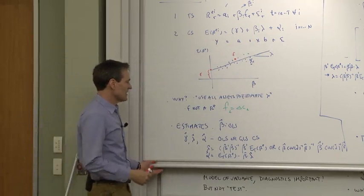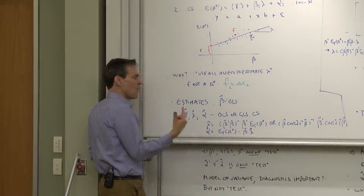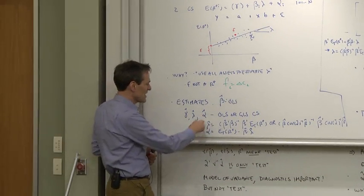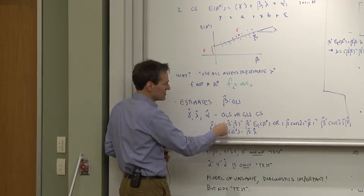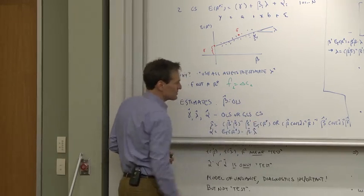To make that clear, I wrote down some formulas. For example, an OLS cross-sectional regression would take the factor risk premium as X prime X inverse X prime Y. The X is now betas, and the Y is expected returns.